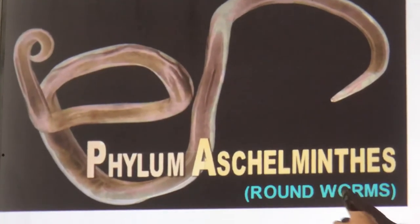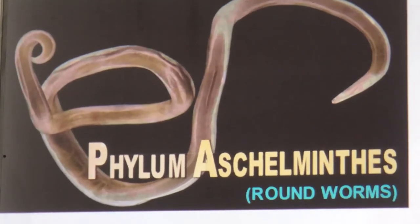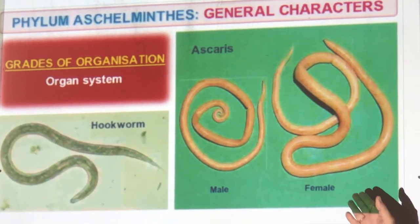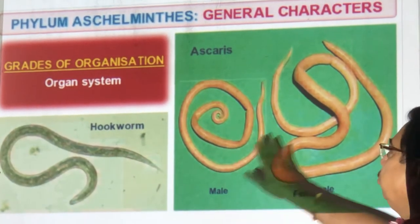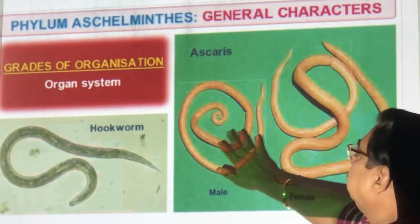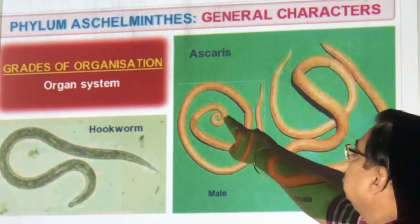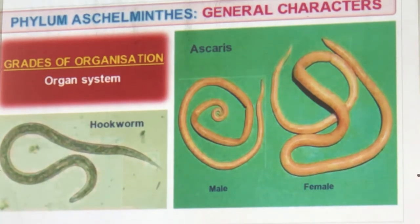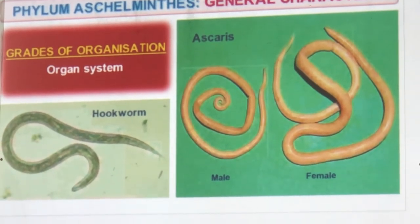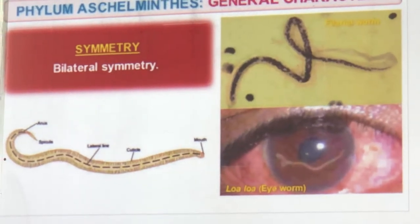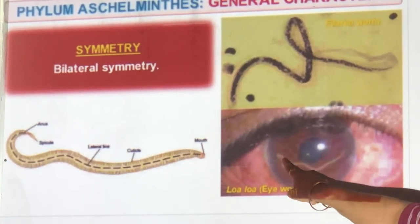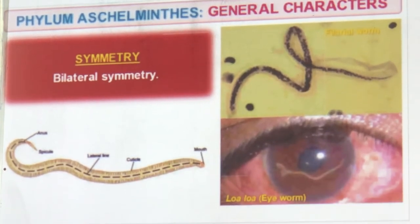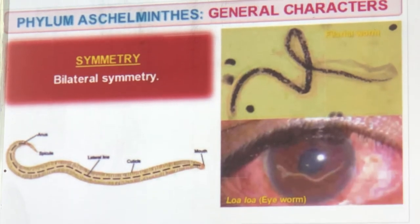Aschelminthes are roundworms — they have an organ system. Examples: hookworm and roundworm. Male and female roundworms show sexual dimorphism — the female is longer, the male shorter with a curled end. So when you remove the worm you can tell male from female. Loa loa is a worm that enters the eyeball — found below the conjunctiva in people who bathe in dirty water.